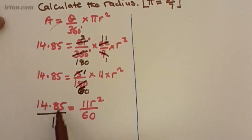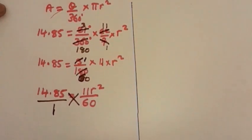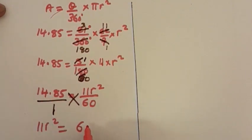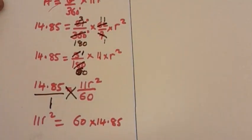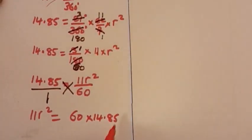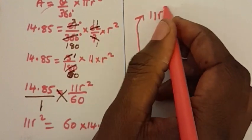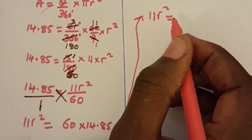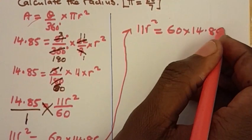We write this as a fraction and then cross multiply. So we are going to have 1 times 11 r squared is equal to 60 times 14.85. That gives us 11 r squared is equal to 60 times 14.85.